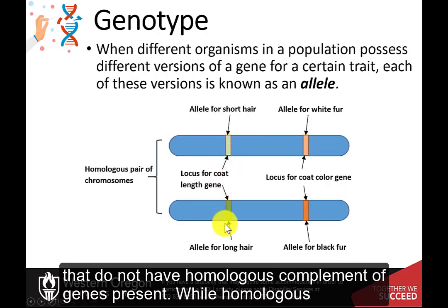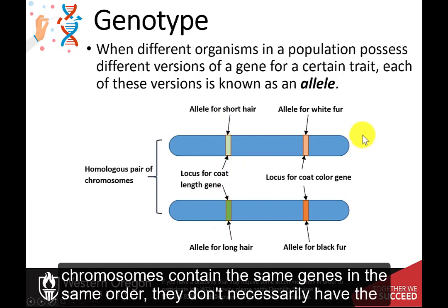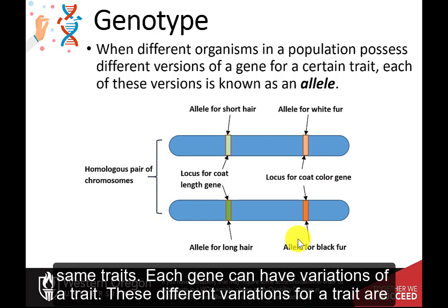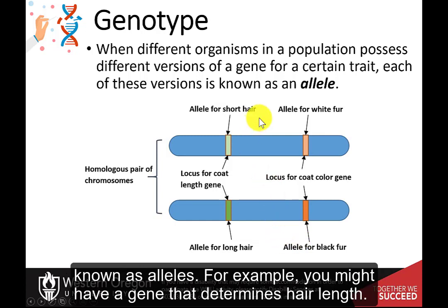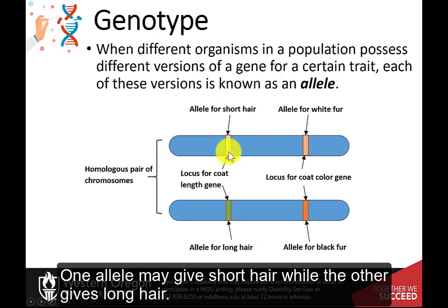While homologous chromosomes contain the same genes, in the same order, they don't necessarily have the same traits. Each gene can have variations of a trait. These different variations for a trait are known as alleles. For example, you might have a gene that determines hair length — one allele may give short hair, while the other gives long hair.